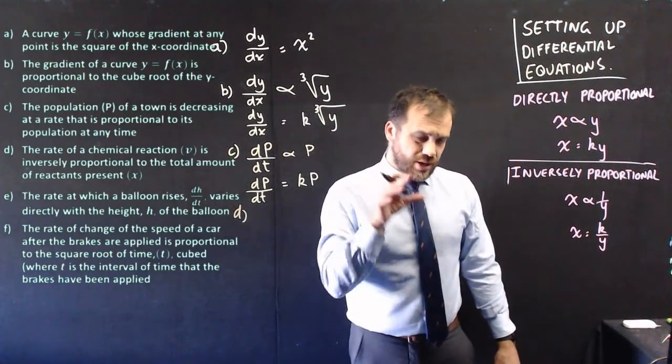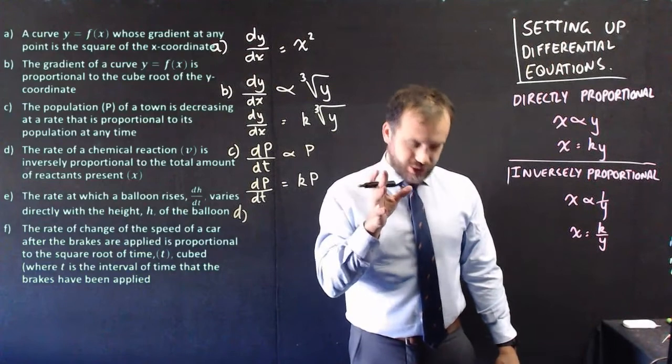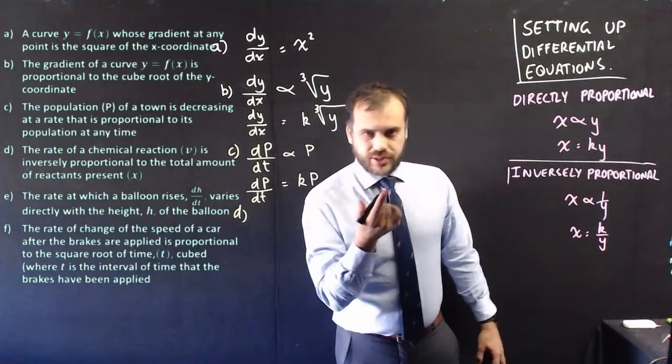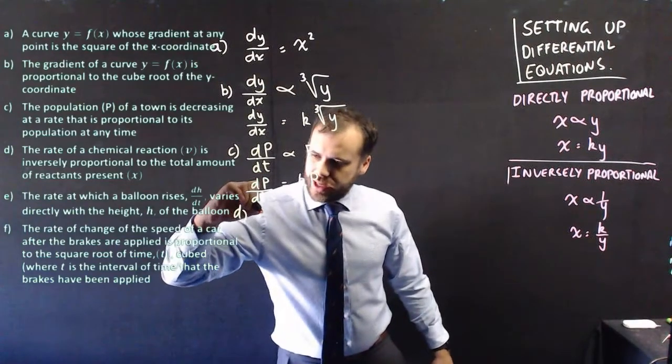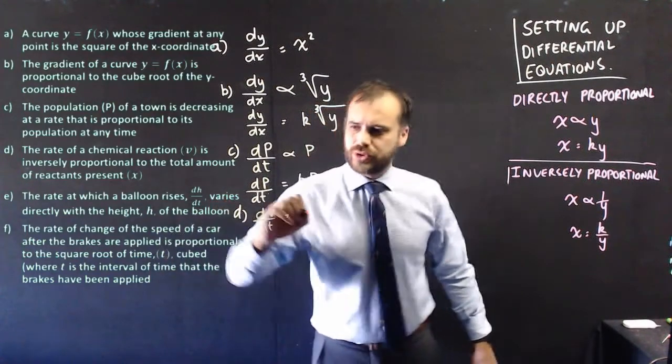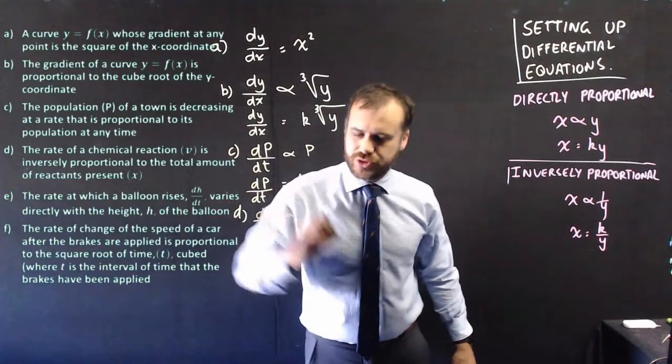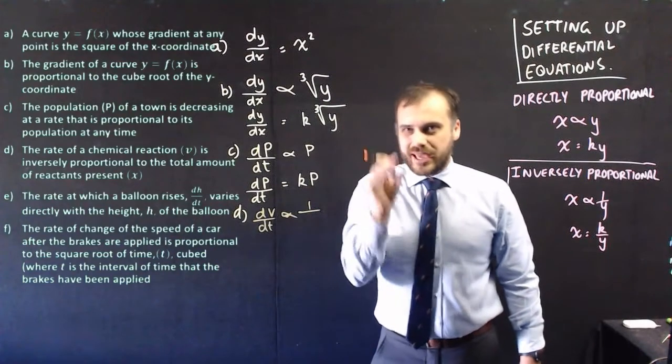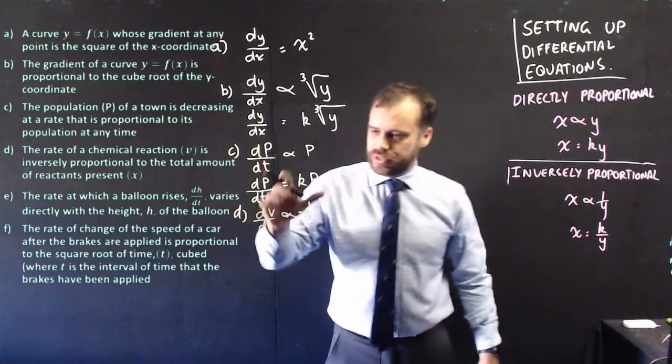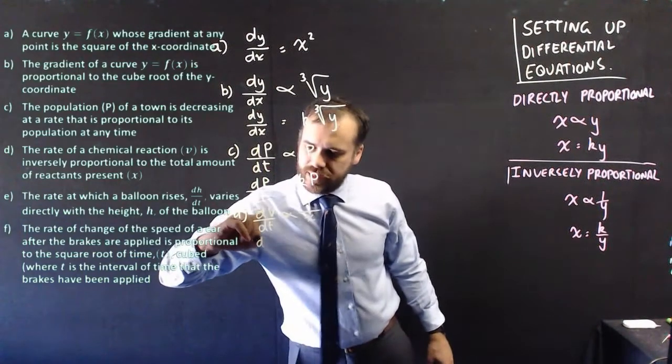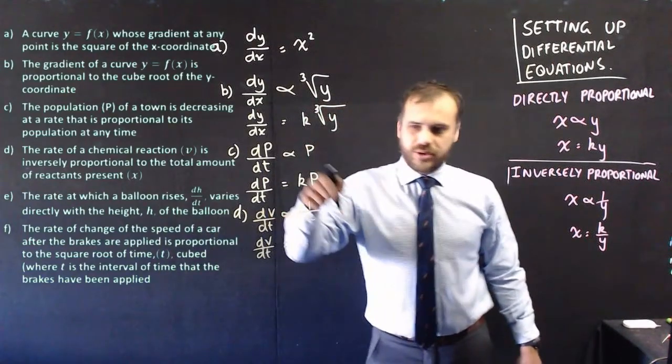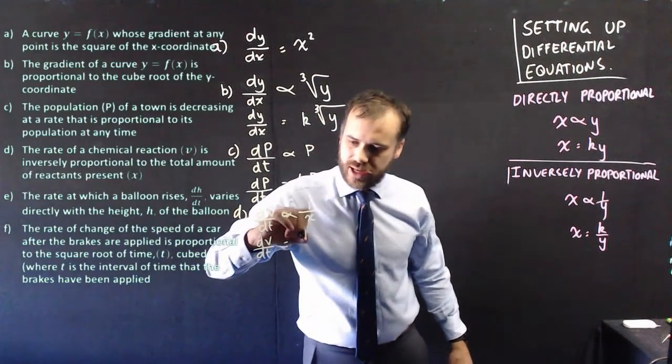All right, so this one's a little strange because it says the rate of a chemical reaction is inversely proportional to the total amount of reactants. So let's step through this one. We say that the rate with respect to time is inversely proportional to, so 1 over x, the number of reactants present. Now, this is a strange one. Before I talk about y, let's just go one more step here. We say that that's dv dt equals not 1 over x, but k over x. k is our constant here.